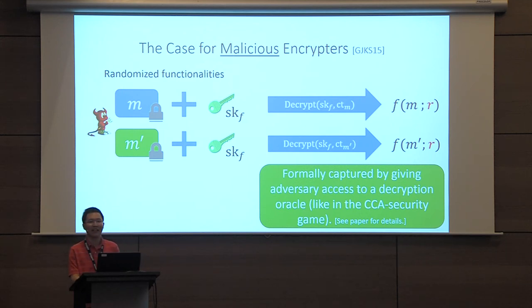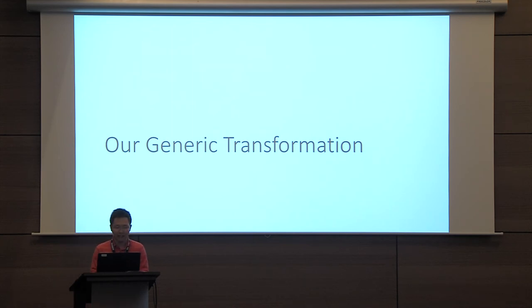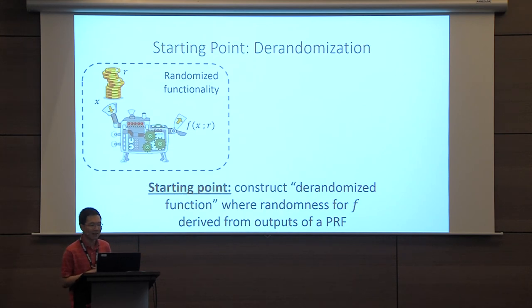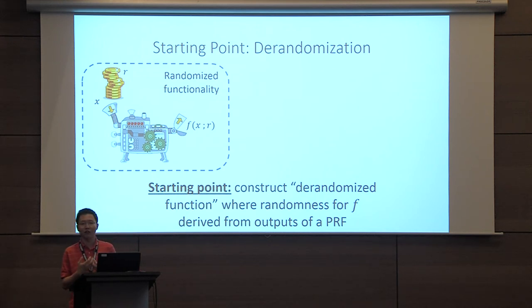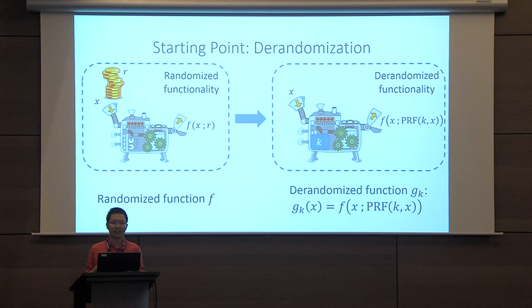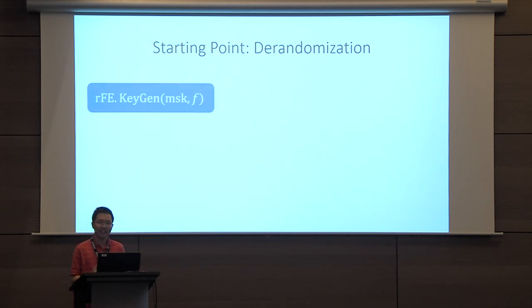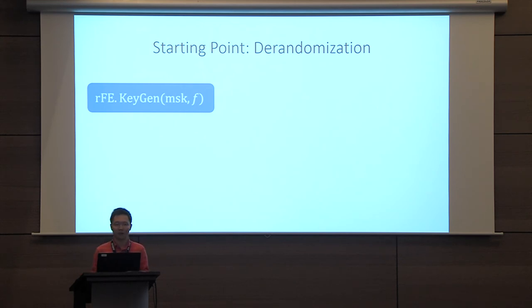Now let me show how our generic transformation works. It starts from a functional encryption scheme for deterministic functionalities and bootstraps that into one supporting all randomized functionalities. The fundamental tool we rely on is derandomization: instead of evaluating the randomized function F using uniformly sampled randomness, we derive that randomness using a pseudo-random function. The derandomized functionality hard-codes a PRF key, and that PRF key is used to derive the randomness for the actual function evaluation. The key generation algorithm samples a key K and issues a key for the underlying deterministic FE scheme for the derandomized functionality.